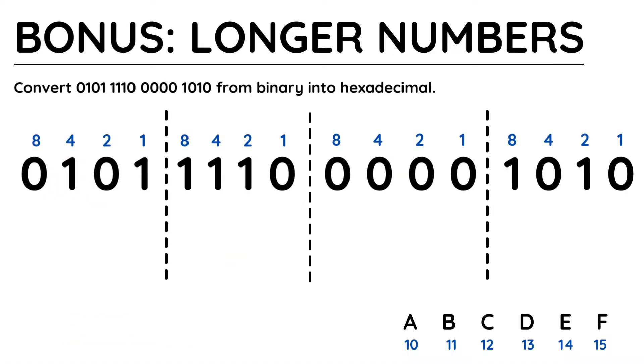For GCSE and A-level computer science courses in the UK, you usually work with just 8 bits to give 2 hexadecimal values.